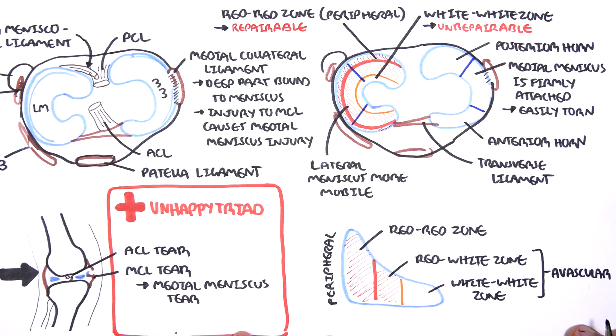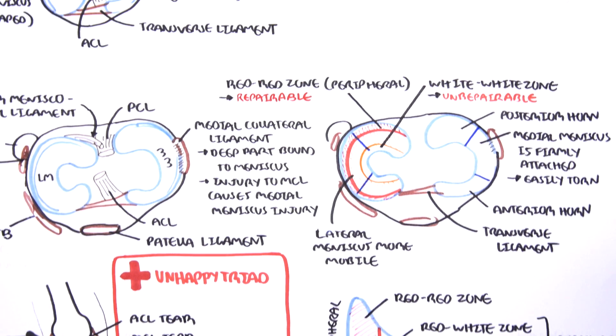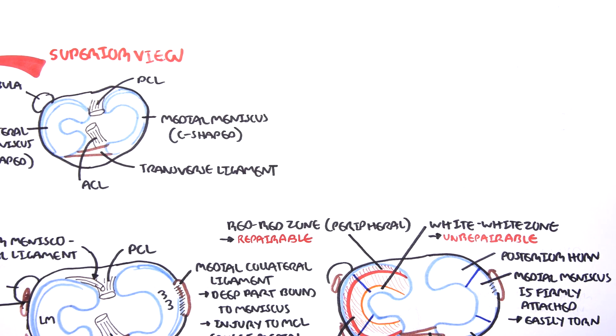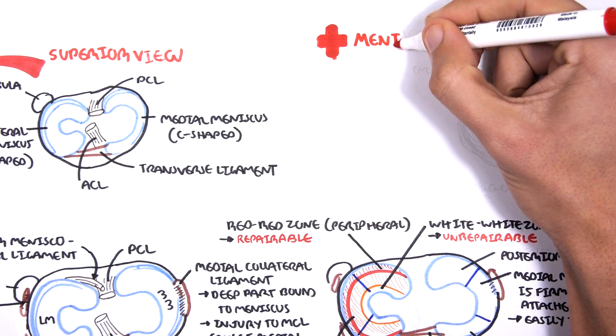The red-white zone and the white-white zone is classified as avascular. Damage to this part of the meniscus means that repairing it is meaningless and so removal would be the best option if patients are symptomatic. What I mean by this is if the damage causes pain.